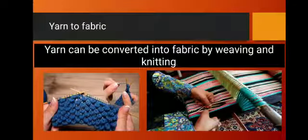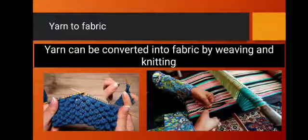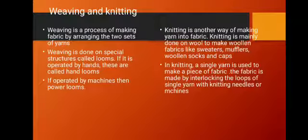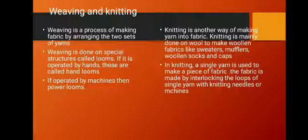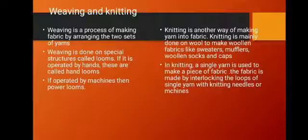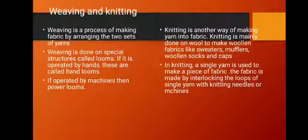Yarns can be converted into fabric by weaving and knitting. Weaving is a process of making fabric by arranging two sets of yarn. Weaving is done on a special structure called a loom; if operated by hand, these are called hand looms, and if operated by machines, they are called power looms. Knitting is another way of making yarn into fabric, mainly done with wool to make woolen items like sweaters, mufflers, woolen socks, and caps. In knitting, a single yarn is used, and the fabric is made by interlocking loops of that yarn with knitting needles or machines.